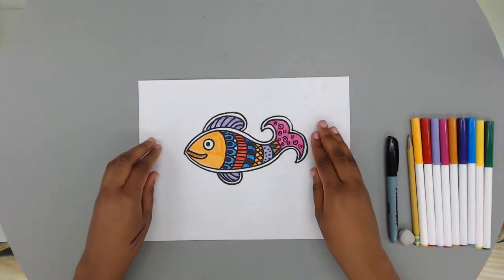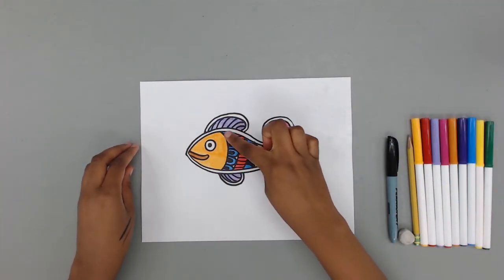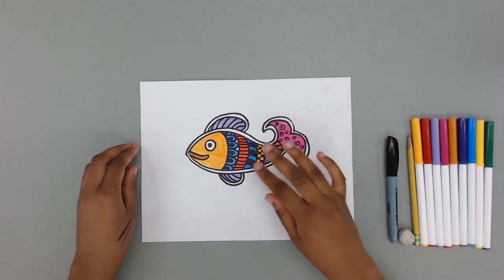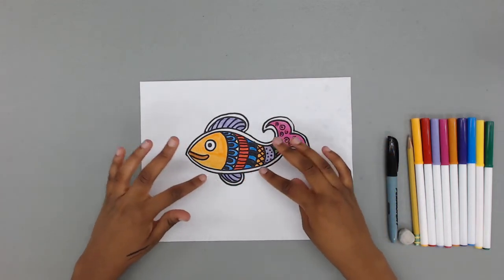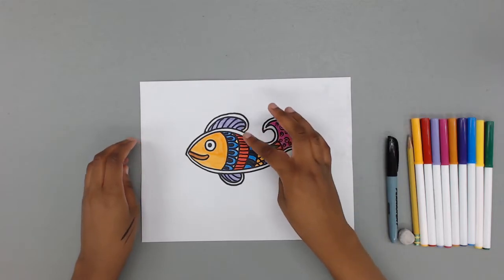Madhubani art is an Indian art style practiced in the Mihila region of Bihar state, India. This style is characterized by a white border around objects, geometric shapes, colorful design, and repetitive line patterns.